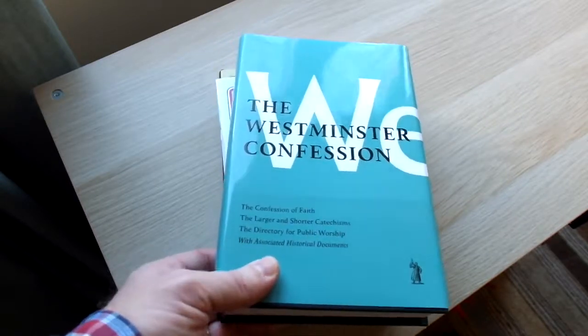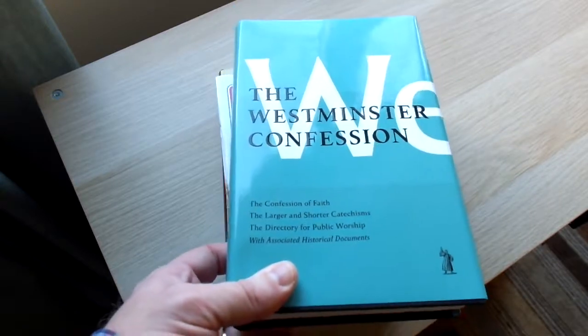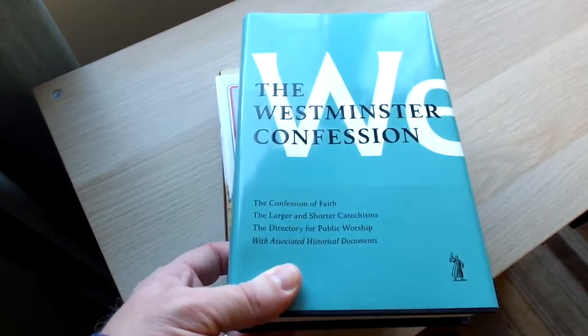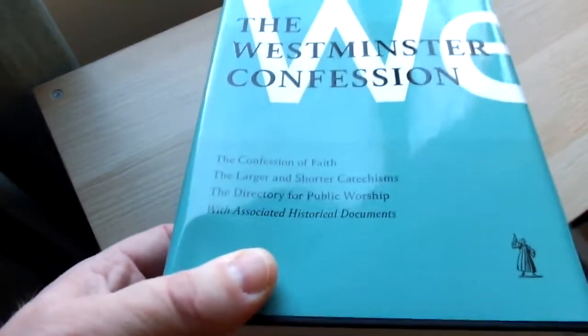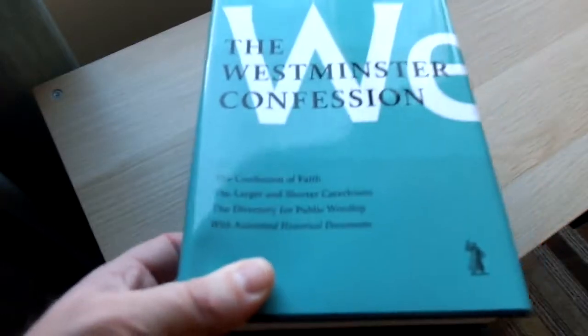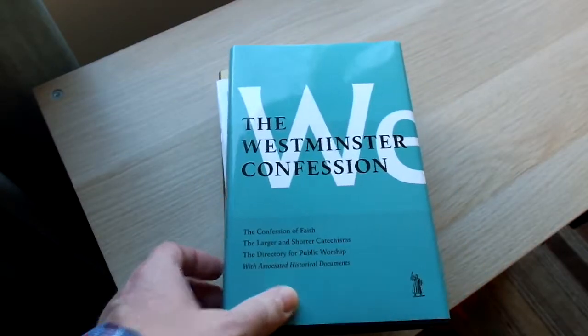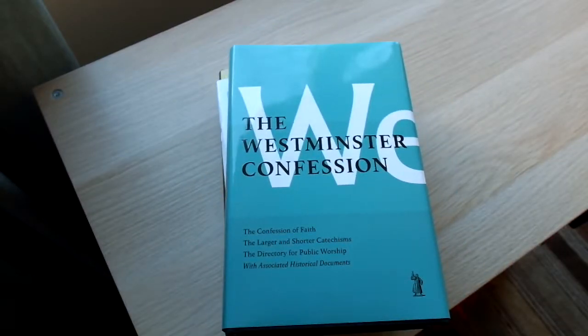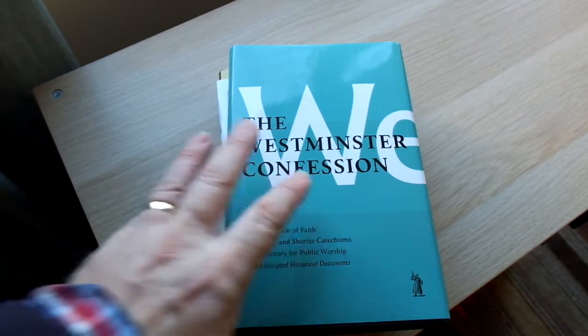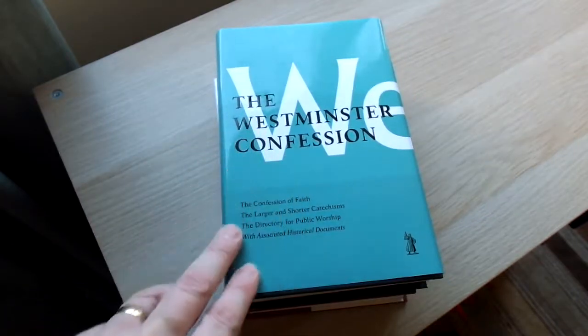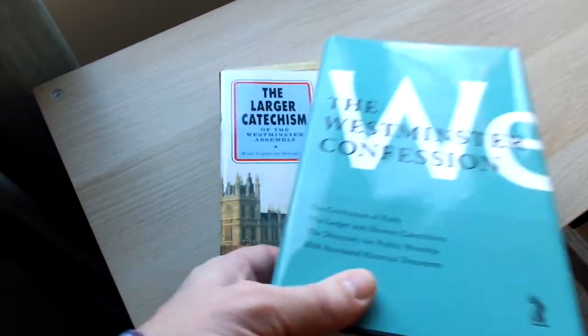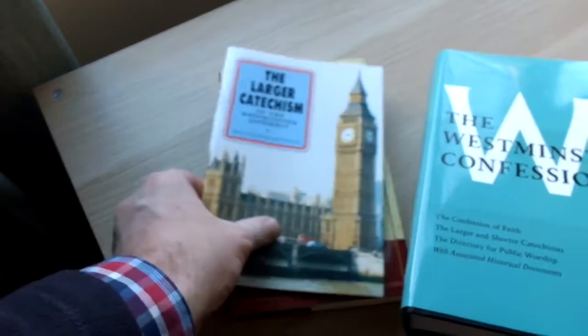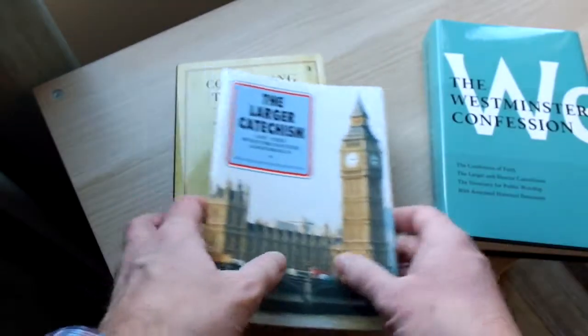And this contains the Westminster Confession of Faith. It also contains the larger and shorter catechisms, the Directory for Public Worship, and also the various different historical documents, the National Covenant pertaining to Scotland, and the Solemn League and Covenant, and various bits and bobs like that. But this also came in a bundle, this was a really good deal, with a few other books which we'll also look at.